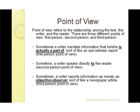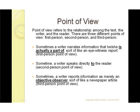Let's start with some basic definitions. When we talk about point of view, all we mean is the relationship that exists between the writer, the reader, and the text itself. There are three main points of view: first, second, and third-person. First-person means the writer is telling us of events he or she was a direct participant in. Second-person shifts the focus to the reader. Third-person is more like a newspaper article — the focus is on the information, not who told us or who's reading it.